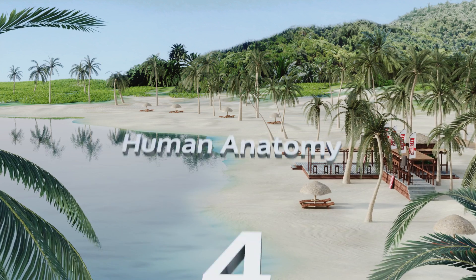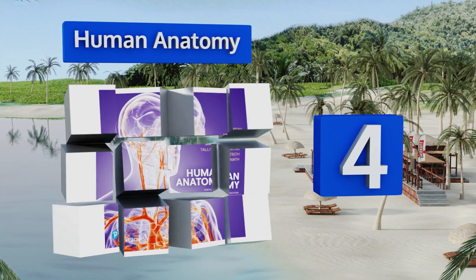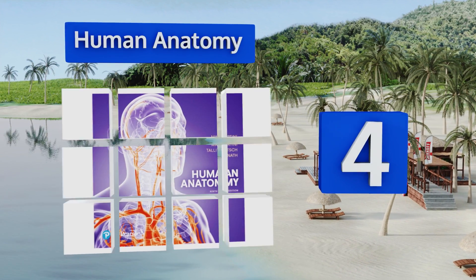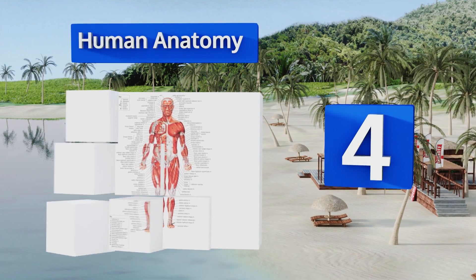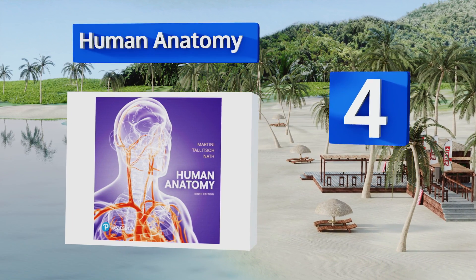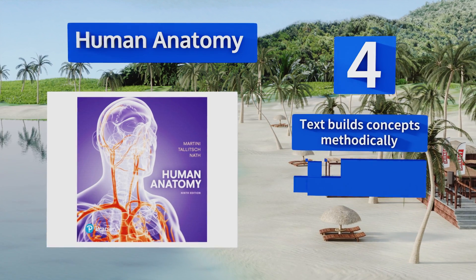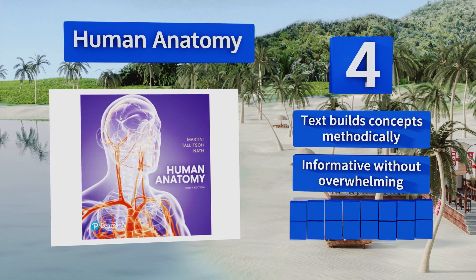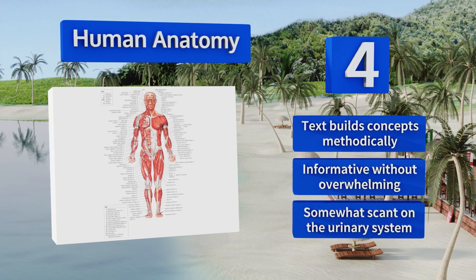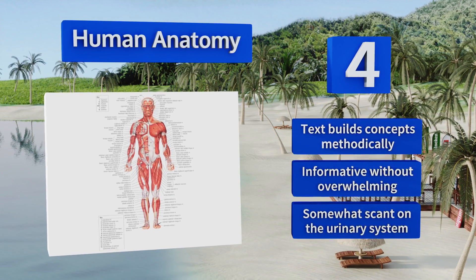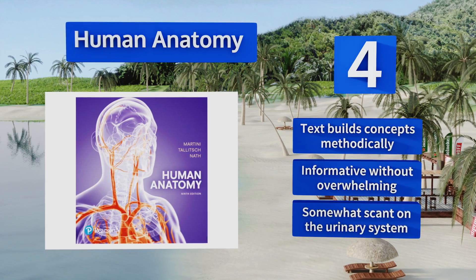At number four, the authoritatively titled Human Anatomy by Martini, Timmons, and Tallitsch is now enjoying a ninth edition printing, and its atlas-style organization and comprehensive diagrams make the human body relatively easy to understand. The text builds concepts methodically and it's informative without being overwhelming, however it's somewhat scant on the urinary system.